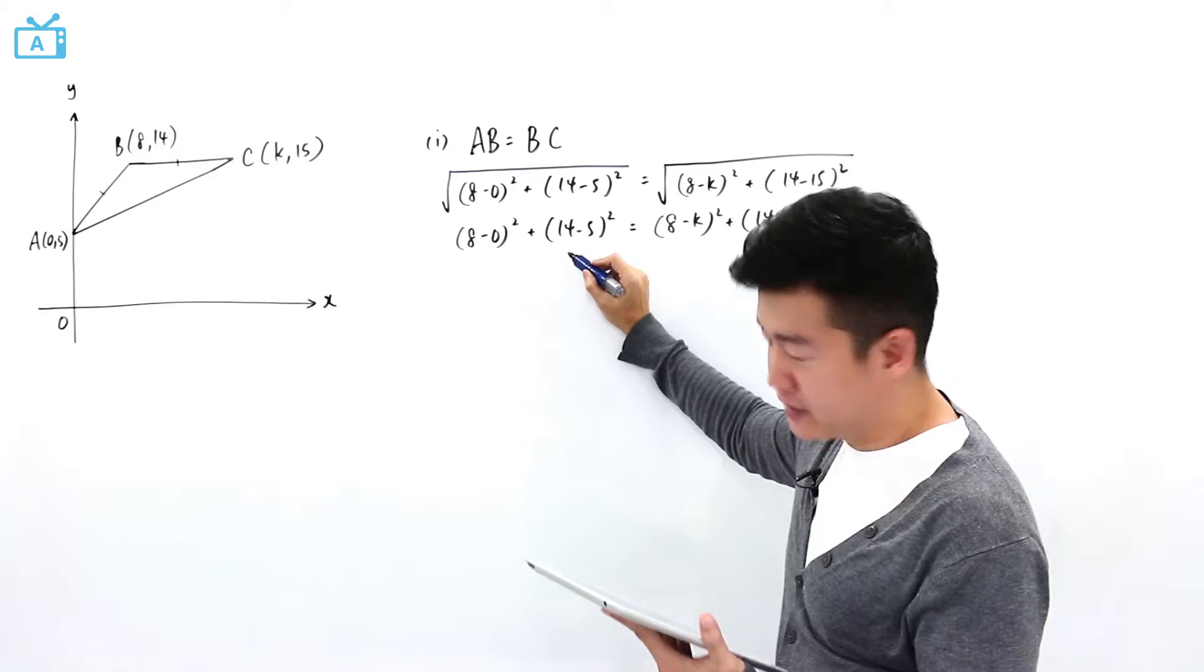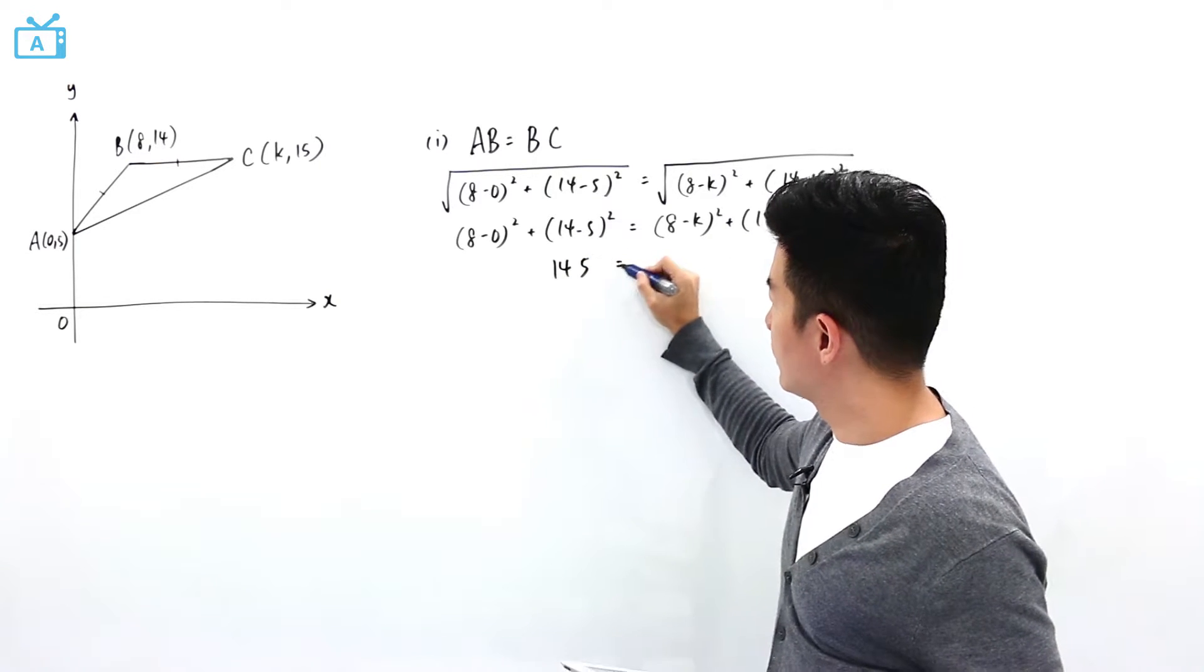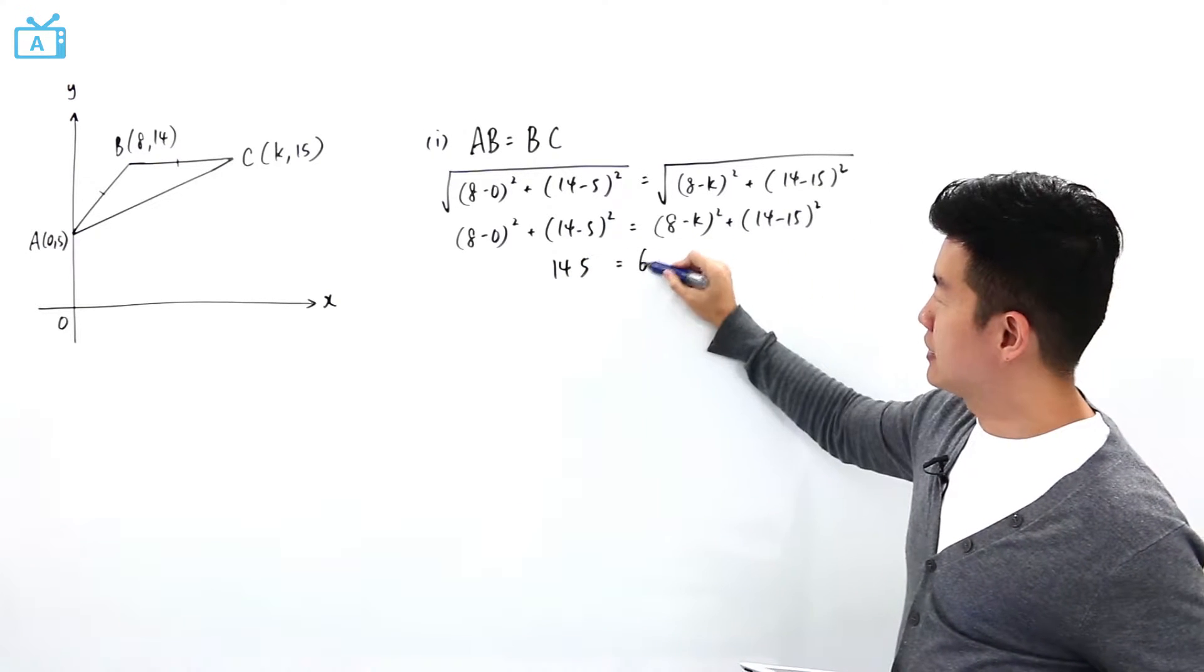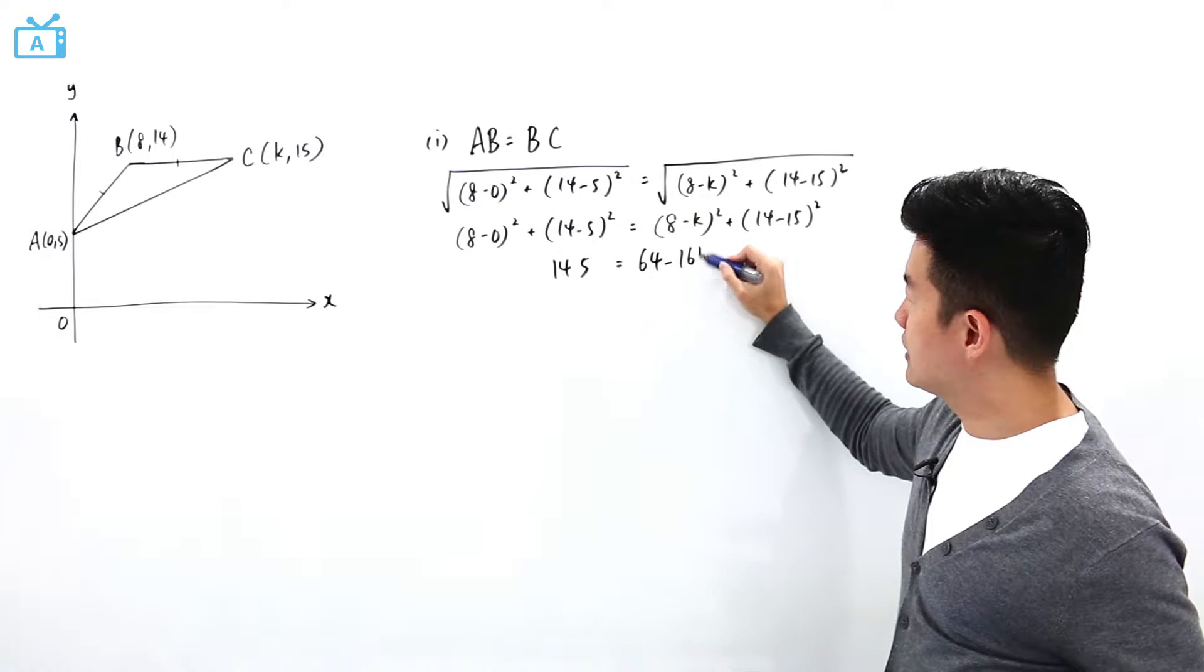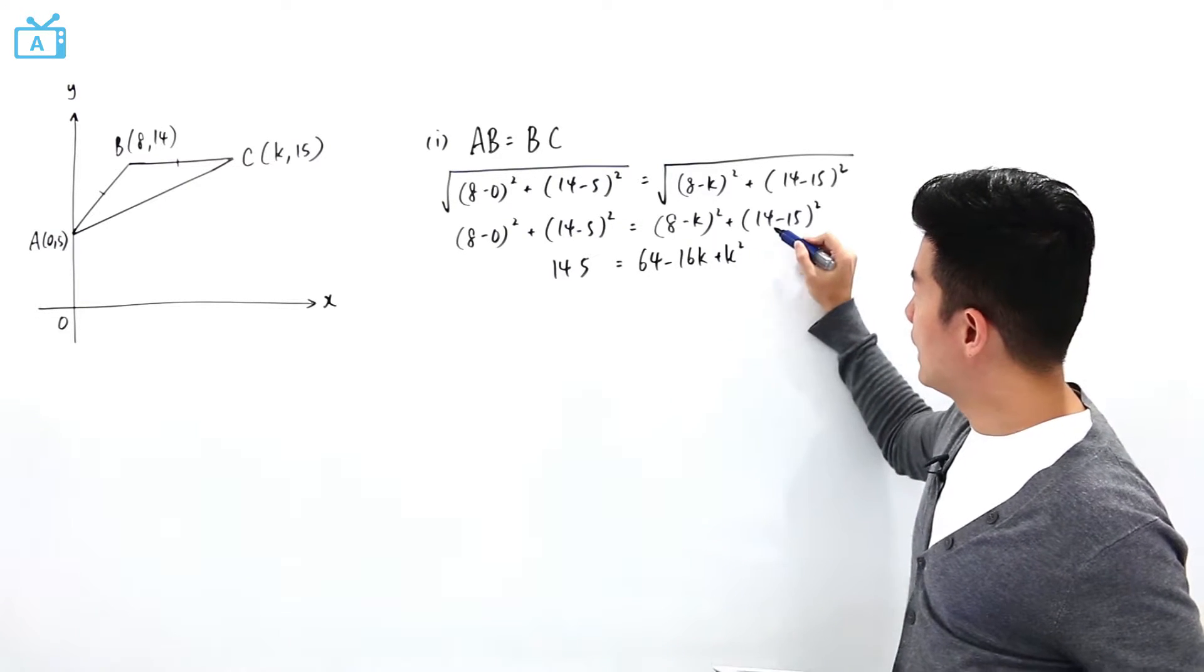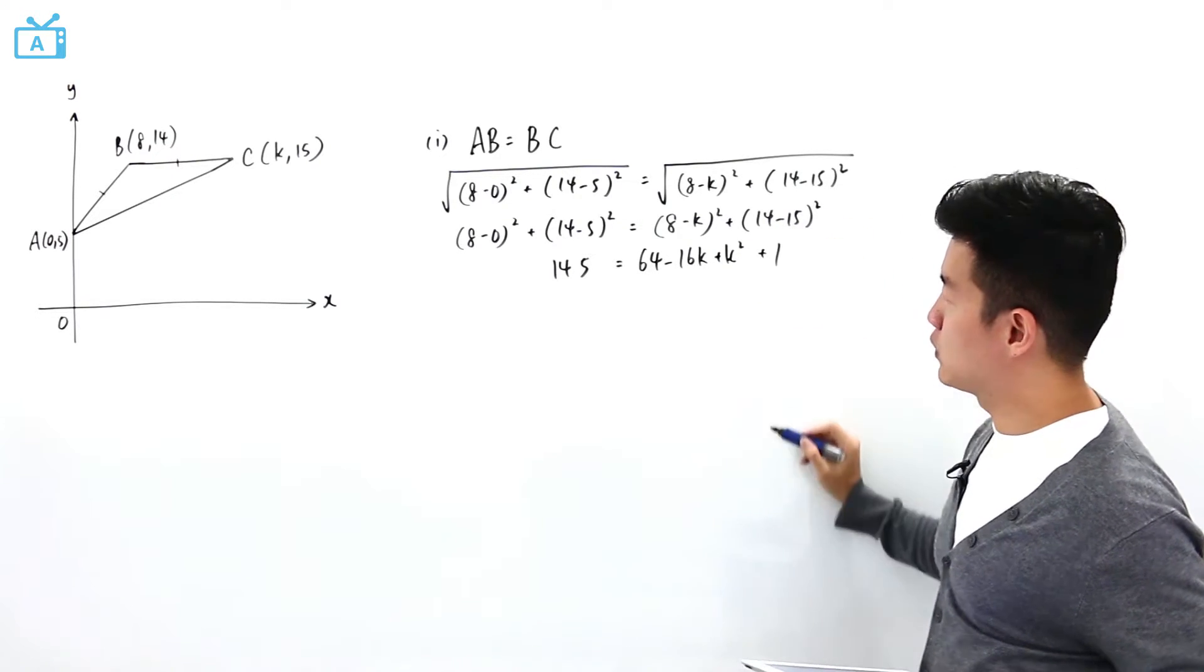If I were to press this in my calculator, this is 145. This expanded, it is 64 minus 16k plus k square, and this is minus 1 square, so plus 1.